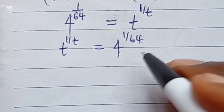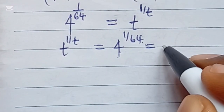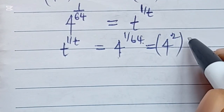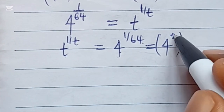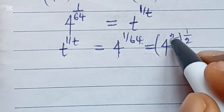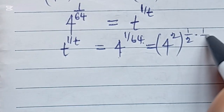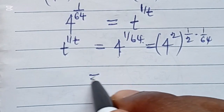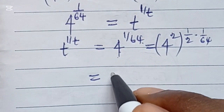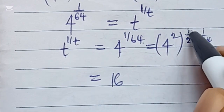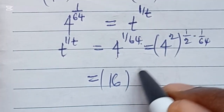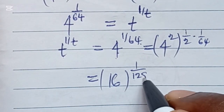One easy way to get this done: say 4 to the power of 2, since 64 is a multiple of 2. We bring out 1 over 2 on the outside, which cancels the 2, and we still have 1 over 64. So 4 to the power of 2 is 16, and on the outside we now have 1 over 2 times 64, which gives us 1 over 128. But 16 and 128 are not the same.